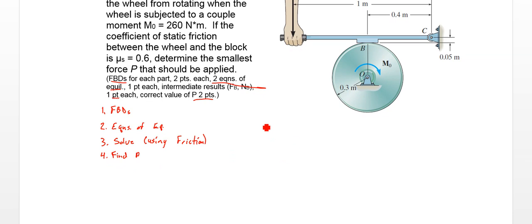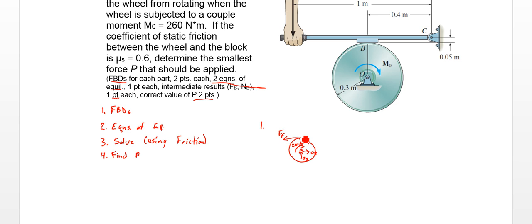So our first step is free body diagrams. We draw one of the wheel and one of the brake. For the wheel, we have a moment of 260 newton meters, and a reaction force at the pin — I'll call these OY and OX. Then we have some friction acting tangentially at the point of application. Since the wheel wants to turn to the right, the frictional force acts in the opposite direction. We also have a normal force NB applied at that point.